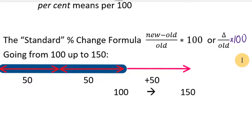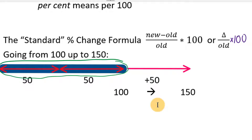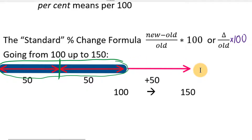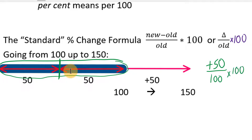Here's an example we can do in our heads. What if we're going from 100 up to 150? The original 100 can be divided into two 50s, and we're going up 50 — that's the change, so the numerator is 50. We divide that by the original number, 100, and multiply by 100. That's 50 percent. When going from 100 up to 150, you're adding half of the original value to itself — an increase of 50 percent.